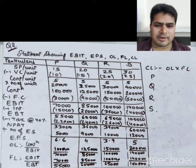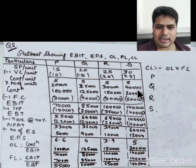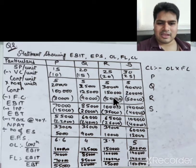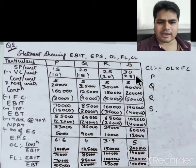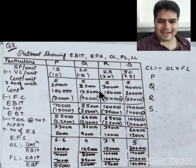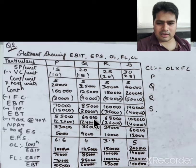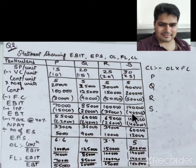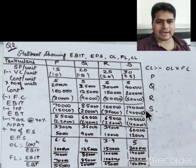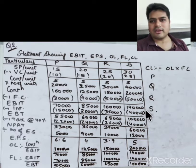Selling price per unit minus variable cost per unit gives contribution per unit. That contribution per unit multiplied by number of units gives total contribution. From total contribution, subtract fixed cost to get EBIT, subtract interest to get EBT, subtract tax to get NPAT, and divide by number of equity shares to get EPS. Then apply OL, FL, and CL formulas.